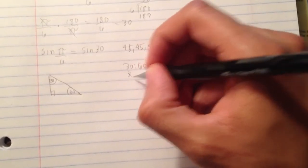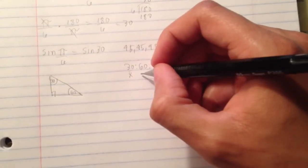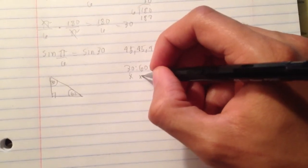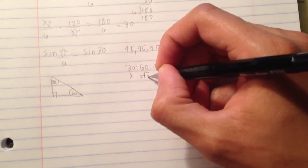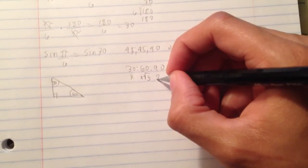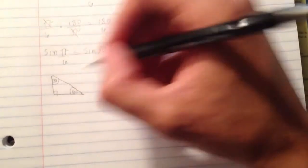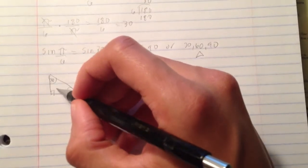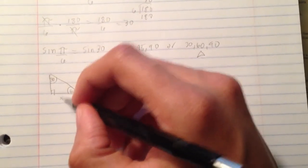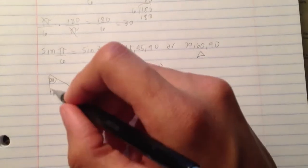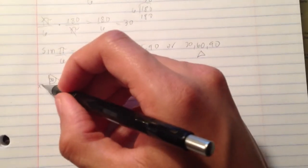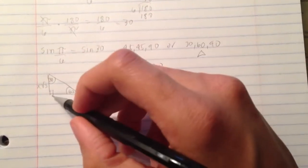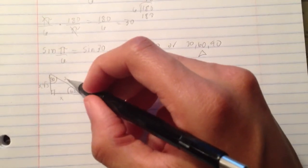You know that opposite of 30 is just x. Opposite of 60 is x radical 3. Opposite of 90 is 2x. Very important to remember this thing right here. So now you know that opposite of 30 is just x, opposite of 60 is x radical 3, and opposite of 90 is 2x.